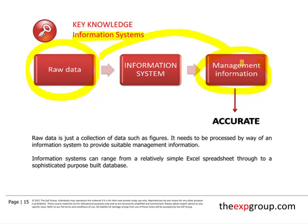Raw data is just a collection of figures - it doesn't mean anything. It has to be converted into management information, and we do that conversion by using information systems. An example of a relatively simple information system is an Excel spreadsheet, where we input the raw data, convert it using various formulas within the spreadsheet, and then get out the other end management information.